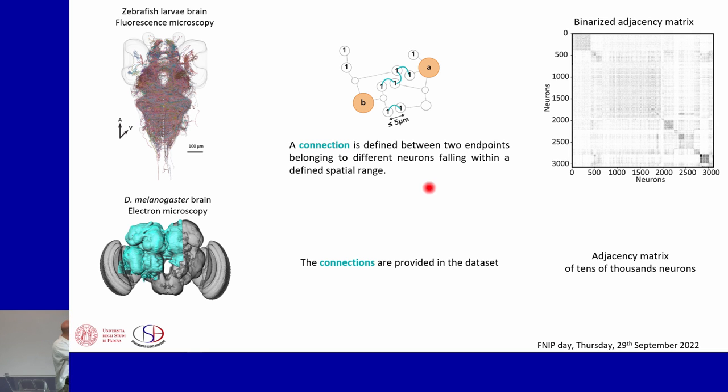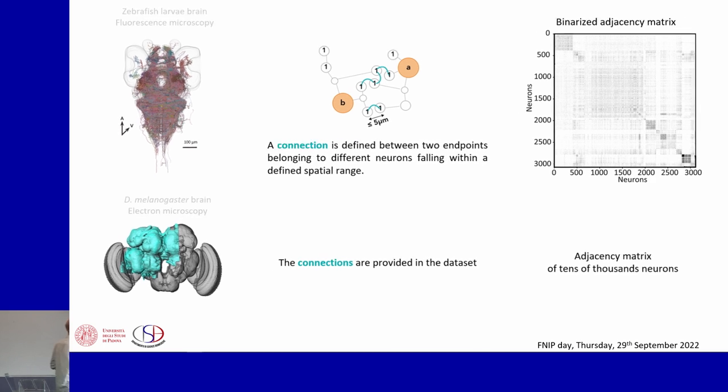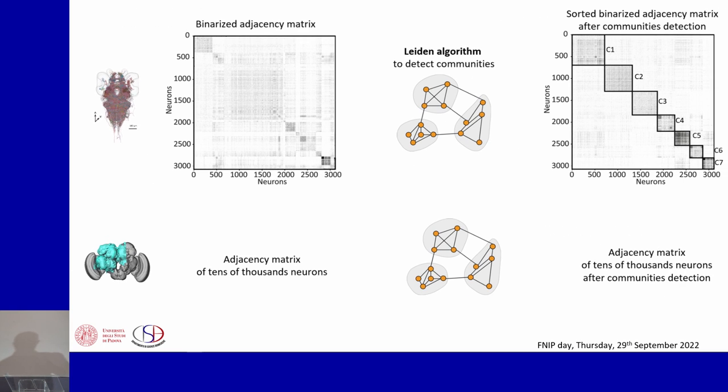All the connections in the brain from the neurons can be conveniently displayed in an adjacency matrix. This one here, in which the black spots that you see are the connections between the neurons. So far so good, but what if we are interested in looking whether there are some structure in our adjacency matrix?